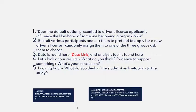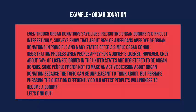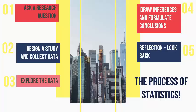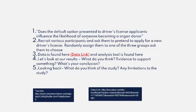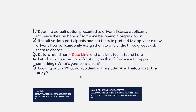Let's go through our five steps. Step one — the research question: Does the default option presented on the driver's license application influence the likelihood of someone becoming an organ donor? Step two — design a study and collect data: We recruit participants, ask them to pretend to apply for a driver's license, and randomly assign them to one of the three groups. Step three — explore the data and turn it into consumable information, which I'm going to do using a cumulative frequency bar chart.